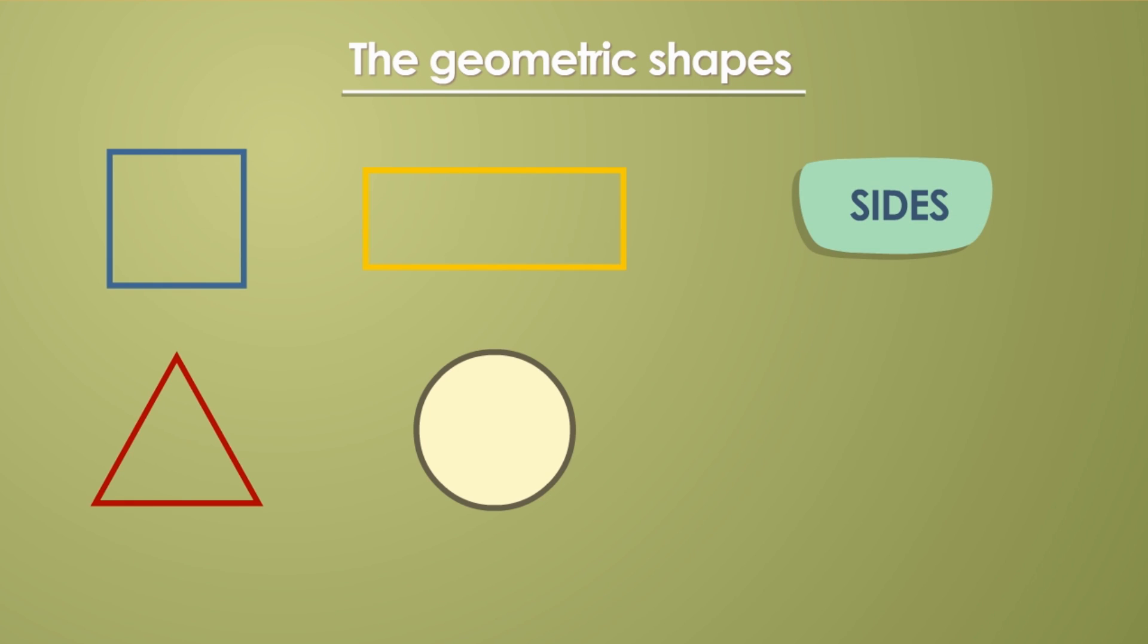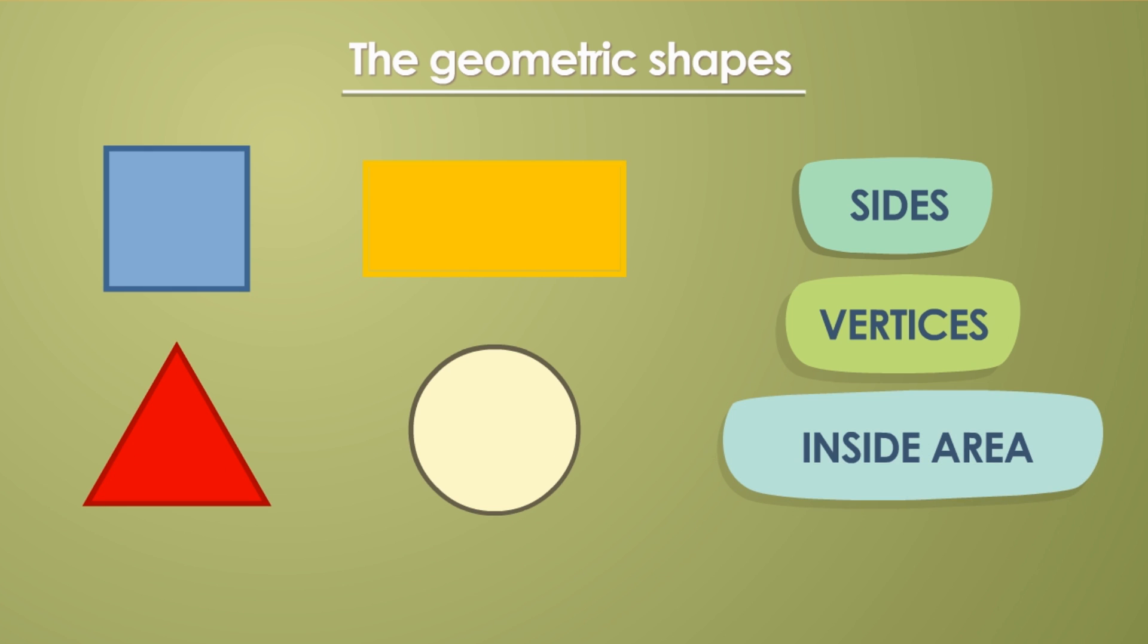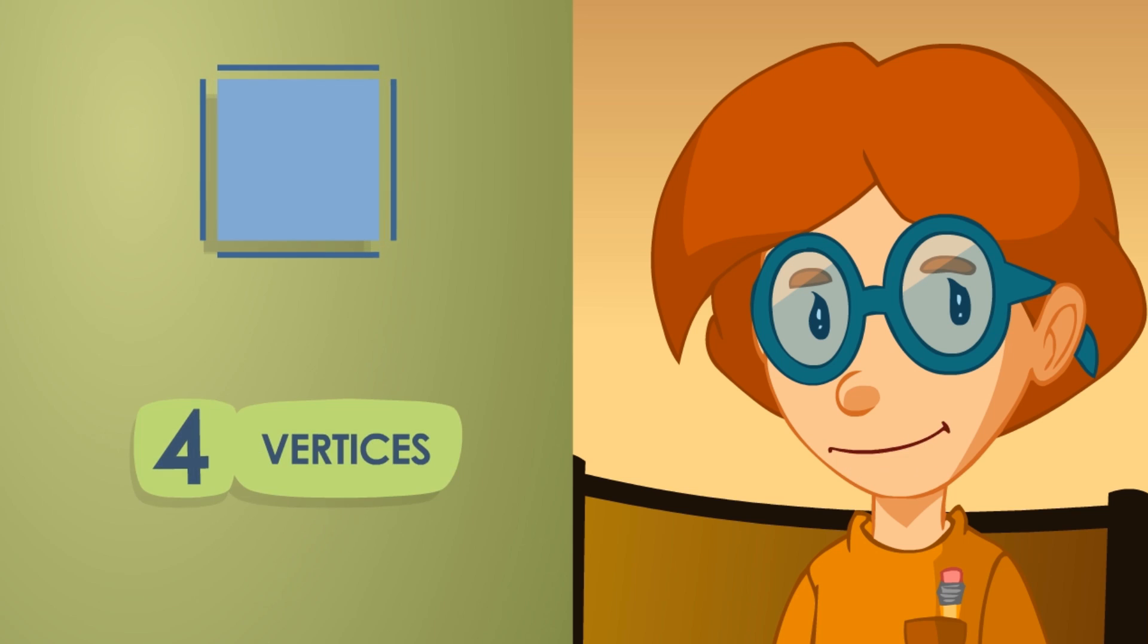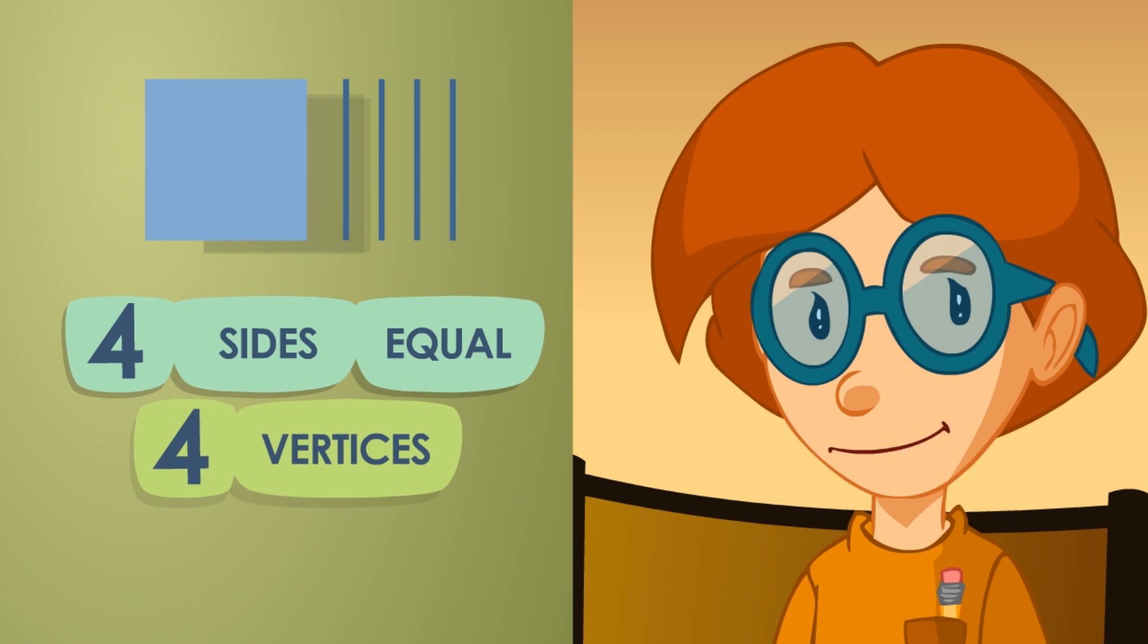The shapes are formed by sides, vertices, and the inside area. Each shape presents different characteristics. The squares have got four vertices and four sides which are equal.